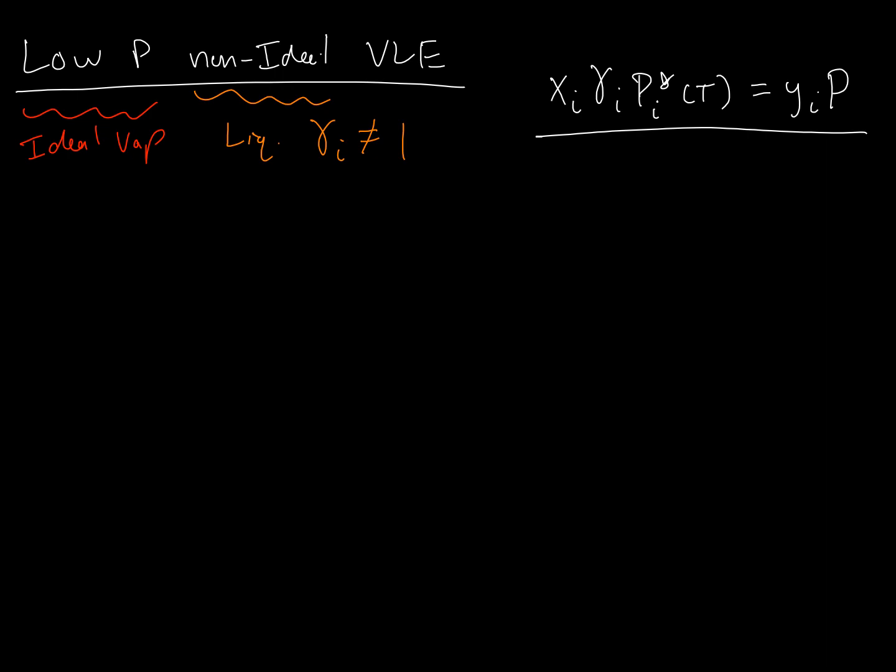Our modified Raoult's Law expression is: mole fraction times activity coefficient times saturation pressure equals the vapor phase partial fugacity, approximated as the mole fraction times the pressure. This is our starting point for all these examples. We need to compartmentalize the problem type — in this section we're dealing with phase equilibrium, so the starting point is always setting the partial fugacities equal.